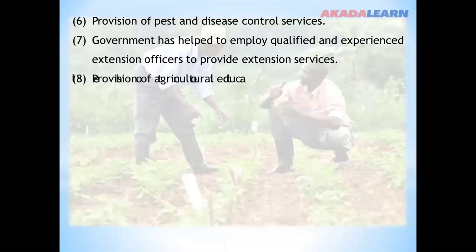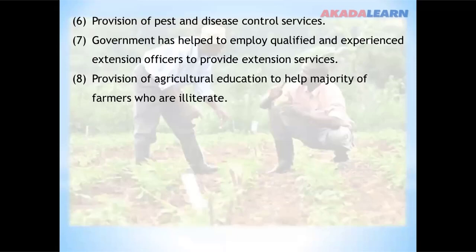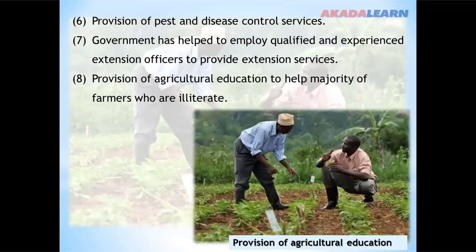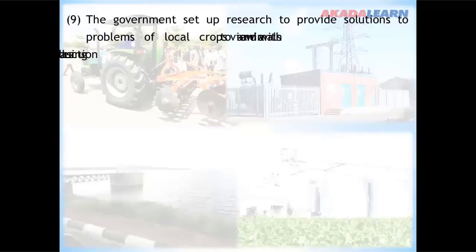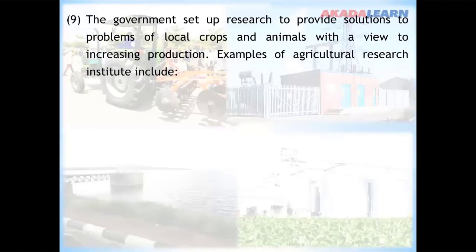Government has also helped in provision of agricultural education to help the majority of farmers who are illiterate — this will help to enlighten them. The government also sets up research institutes to provide solutions to problems of local crops and animals with a view to increasing production.